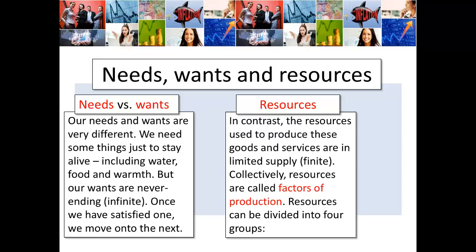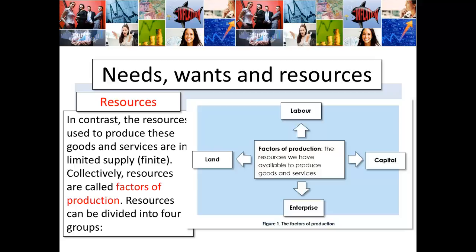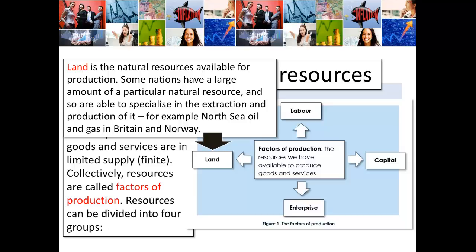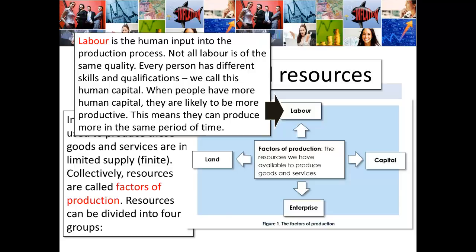The four factors of production are our resources. Land is a natural resource available for production — some nations have a large amount of a particular natural resource and can specialize in extraction and production of it, for example North Sea oil and gas in Britain and Norway. Labour is the human input into the production process. Not all labour is of the same quality — different people have different skills and qualifications, which we call human capital. When people have more human capital, they're likely to be more productive, meaning they can produce more in the same period of time.